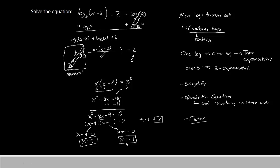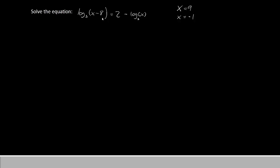We need to check to make sure that when we put them back into the equation, we don't get anything we're not supposed to. To do that, we're going to reset the equation. Log base 3 of x minus 8 equals 2 minus log base 3 of x. And try putting in 9. Specifically, we want to make sure that there are no negative logs.